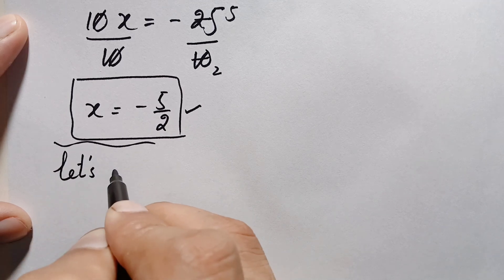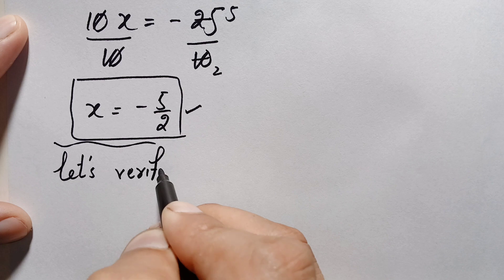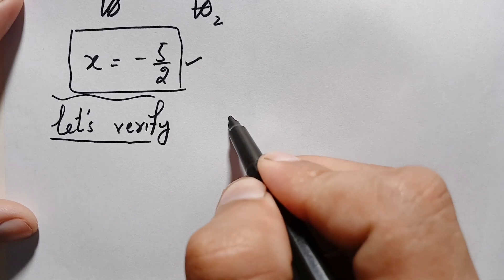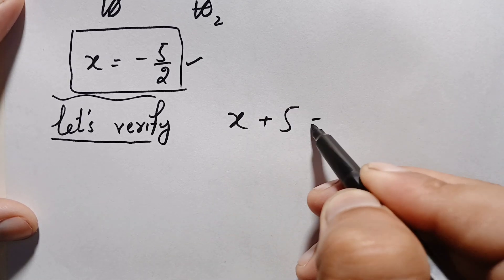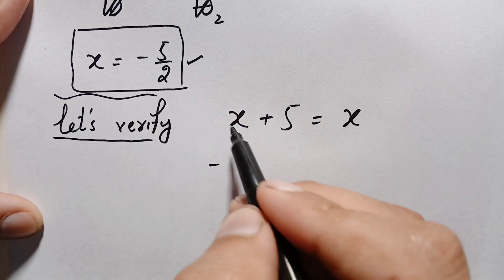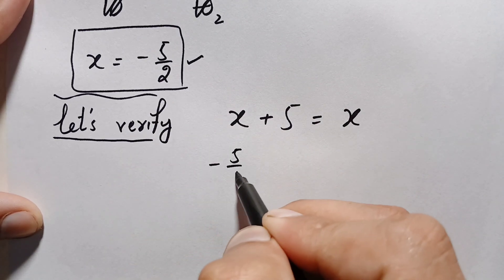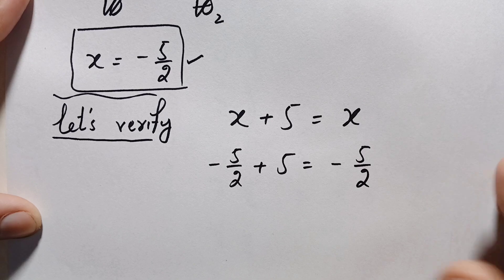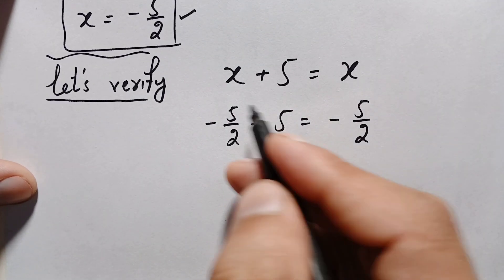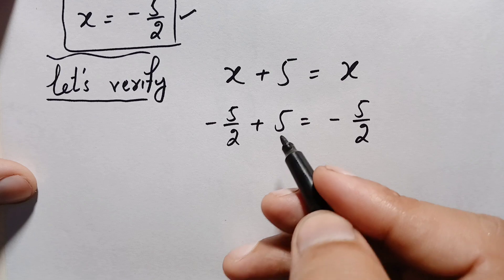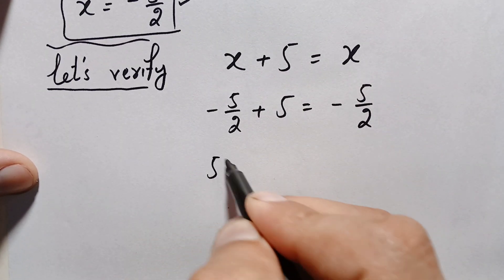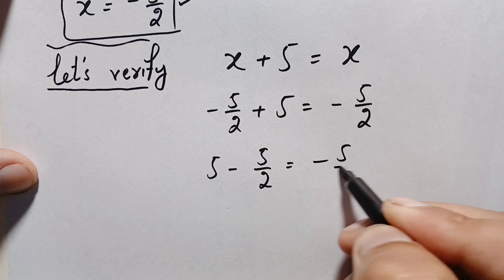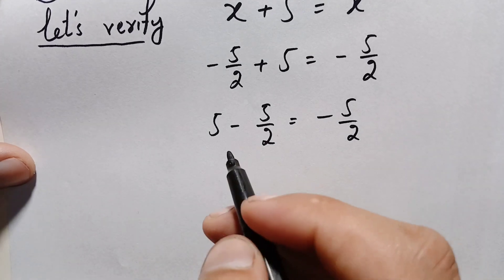Let's verify. Our problem is x plus 5 equals x. Substituting x equals negative 5 over 2, the left-hand side becomes negative 5 over 2 plus 5, and the right-hand side is negative 5 over 2. Rearranging, we write 5 minus 5 over 2 on the left-hand side, equal to negative 5 over 2.